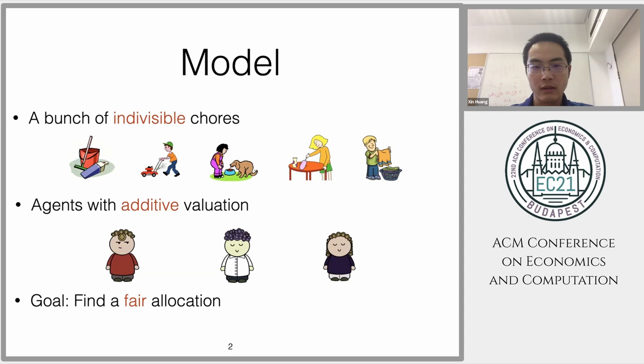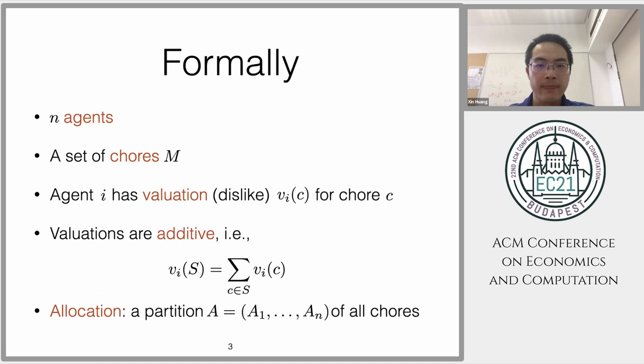Formally, we have n agents and a set of chores M. For each agent i, we have an additive valuation vi. Here we give a positive valuation, so when you have large value, this means that you dislike this chore more. Allocation is the partition of all those chores.